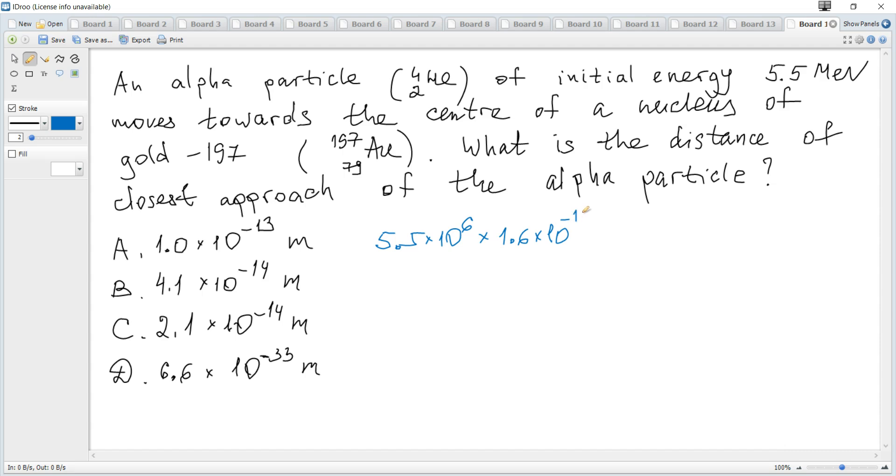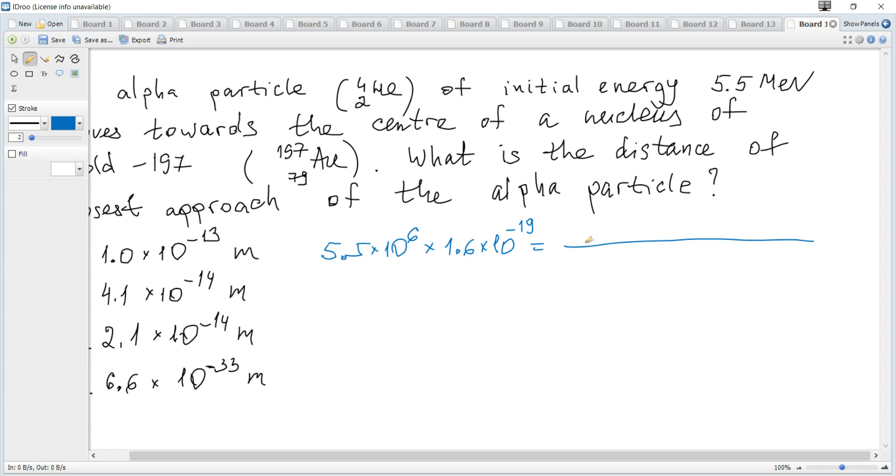1.6 times 10 to negative 19, and it is equal to electric potential energy. The coefficient k is 9 times 10 to the power of 9.